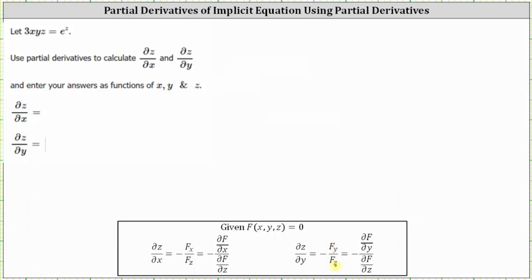Notice that the given equation is not set equal to zero. So let's subtract 3xyz from both sides of the equation so that we can write F(x, y, z) in the form of e to the z minus 3xyz equals zero. And now we can use F(x, y, z) to determine the partial derivatives.